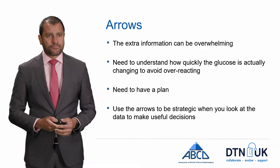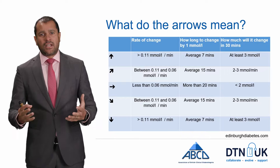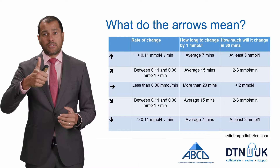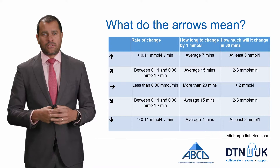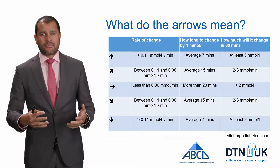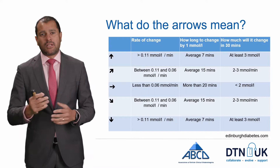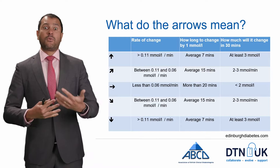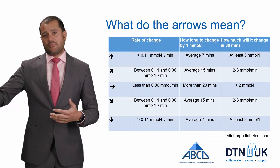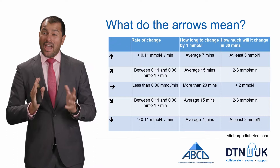This table gives you an idea about what the arrows mean. The first arrow, going straight up, means the rate of change of glucose is more than 0.11 mmol per minute — on average you're going to go up by one mmol in about seven minutes. In 30 minutes, if you've got a straight up arrow, you're going to go up by at least three and on average about five mmol per litre.